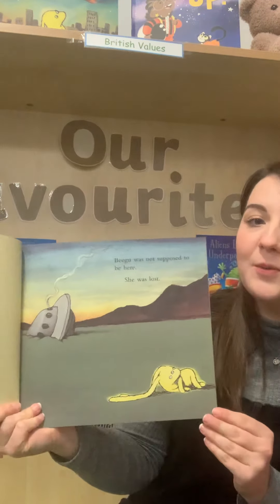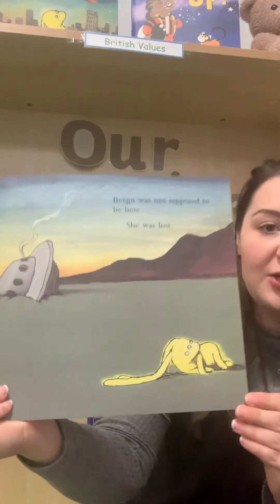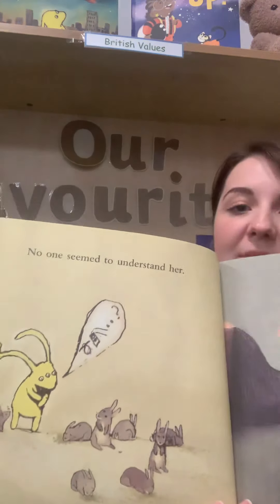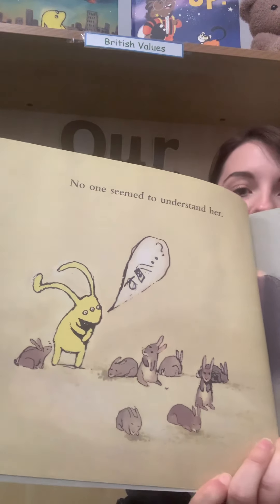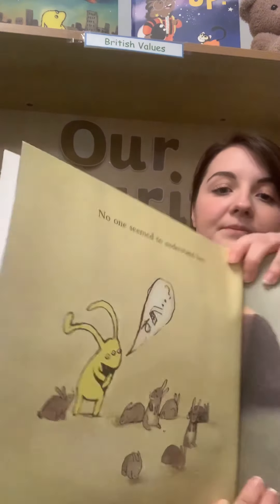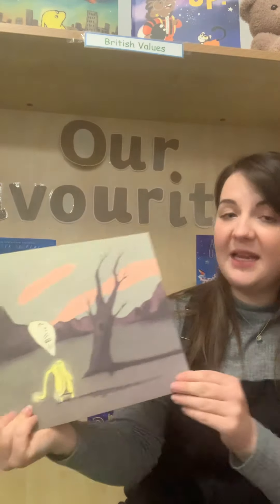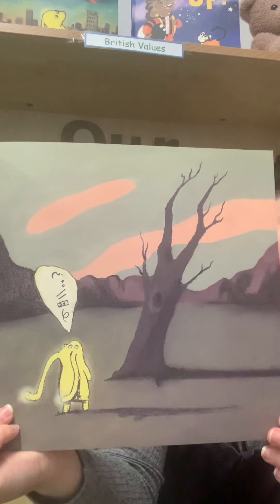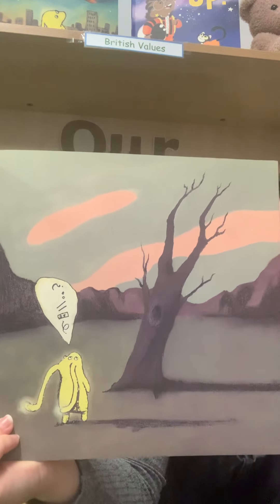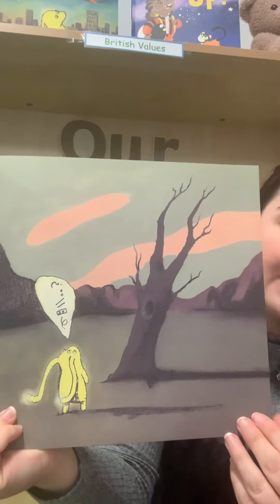Beegoo was not supposed to be here. She was lost. What do we think happened? How did she get there? No one seemed to understand her. I wonder why they didn't understand her. It looks here like she's talking to the tree. Maybe she's never seen a tree before and they don't have trees on her planet. So she's looking a little bit confused.